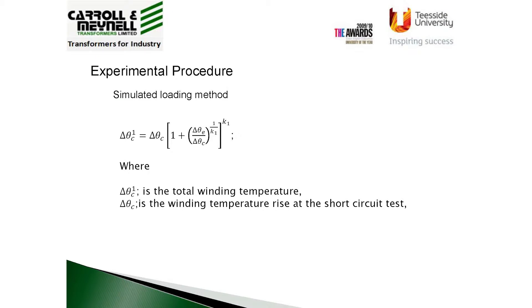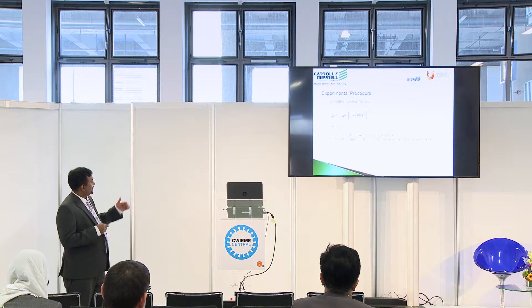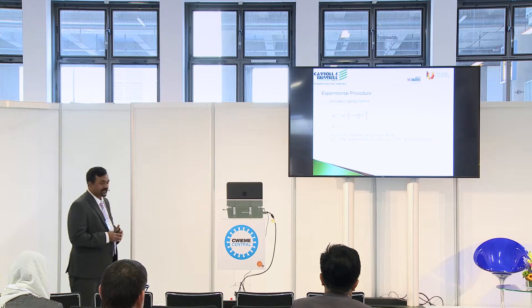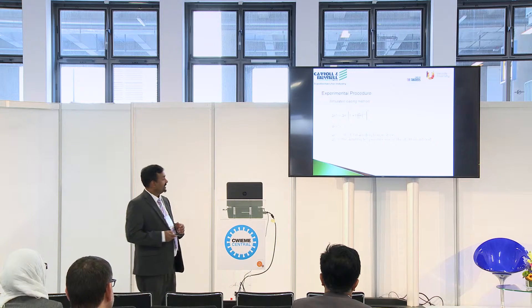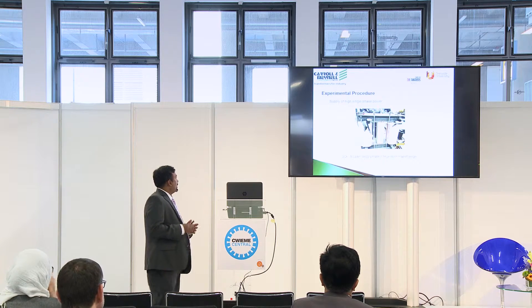This situation is addressed in transformer standard IEC 60076 section 11, where a simulated loading technique is defined. It is quite straightforward: in the first stage we load the core of the transformer with an open circuit secondary and record the temperature rise. Once the core is warm, we load the windings by short circuiting them — in which case we don't need megawatt-level power. Then an empirical formula defined by the standard estimates the overall temperature rise of the unit.